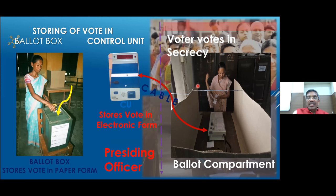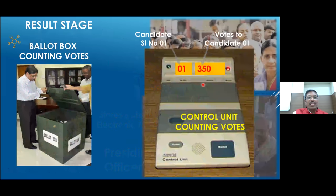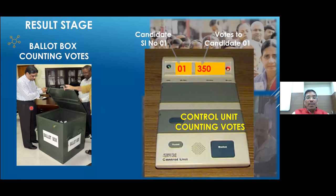At the result stage, the control unit has a button by which results can be counted. When results are counted, it displays the candidate number and the corresponding total votes cast on that particular machine — replacing the old process of opening ballot boxes, mixing papers, sorting and counting.